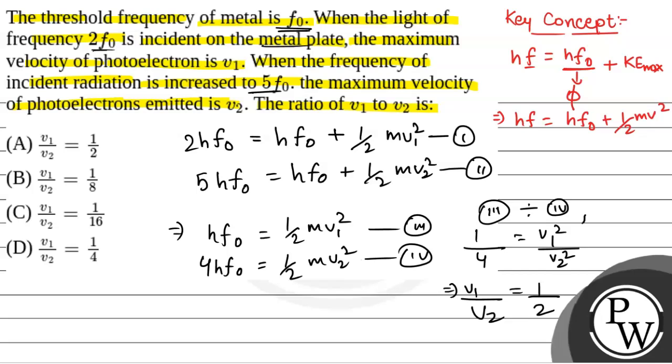So, the correct option will be option A. V1 by V2 is equal to 1 by 2. Hope you all understood it well.